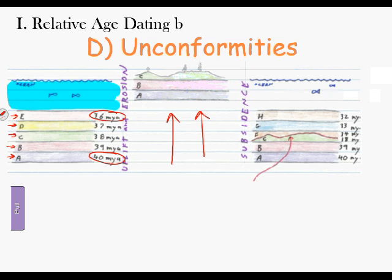You'll notice that some of those rock layers are now missing. I still have rock layer A, still have rock layer B, and still have a piece of rock layer C, although some of it has been weathered and eroded away. Rock layers D and E, which were there, have now been destroyed by weathering and erosion. So between uplift and weathering and erosion, we have rock that used to be there that has now been destroyed.